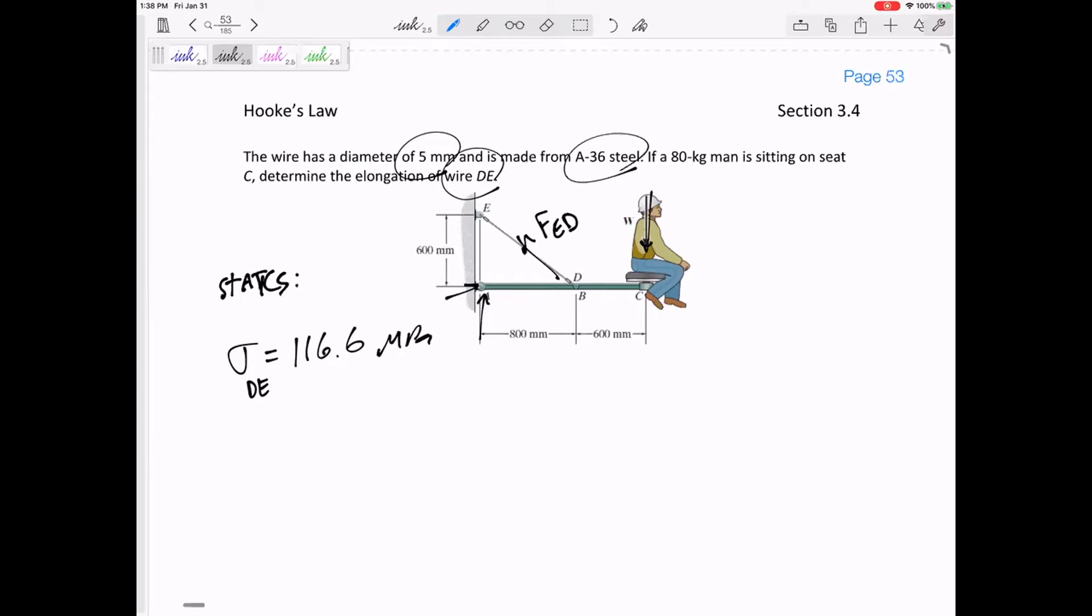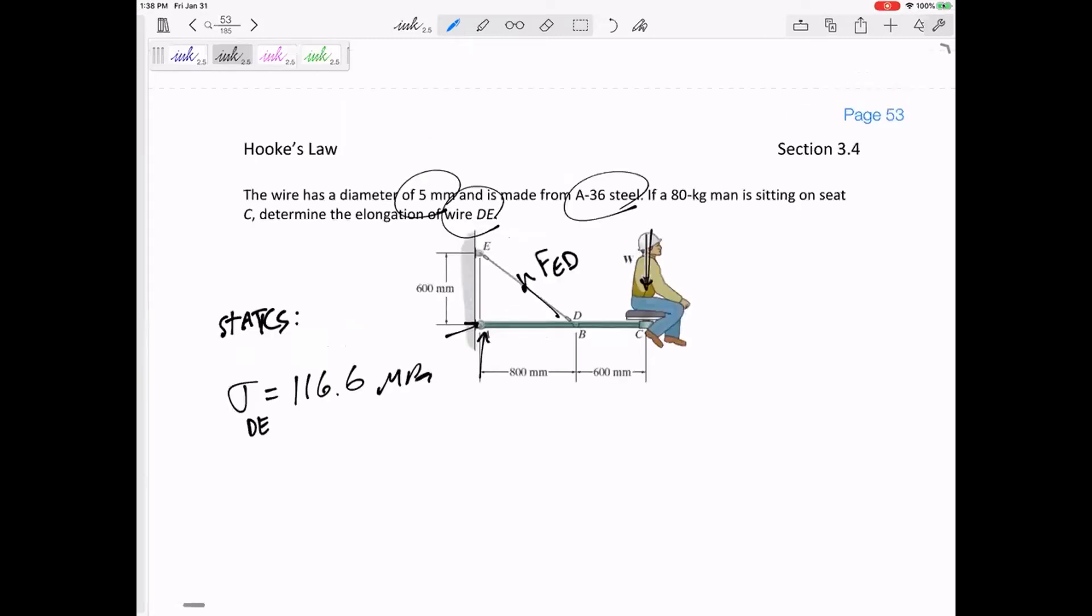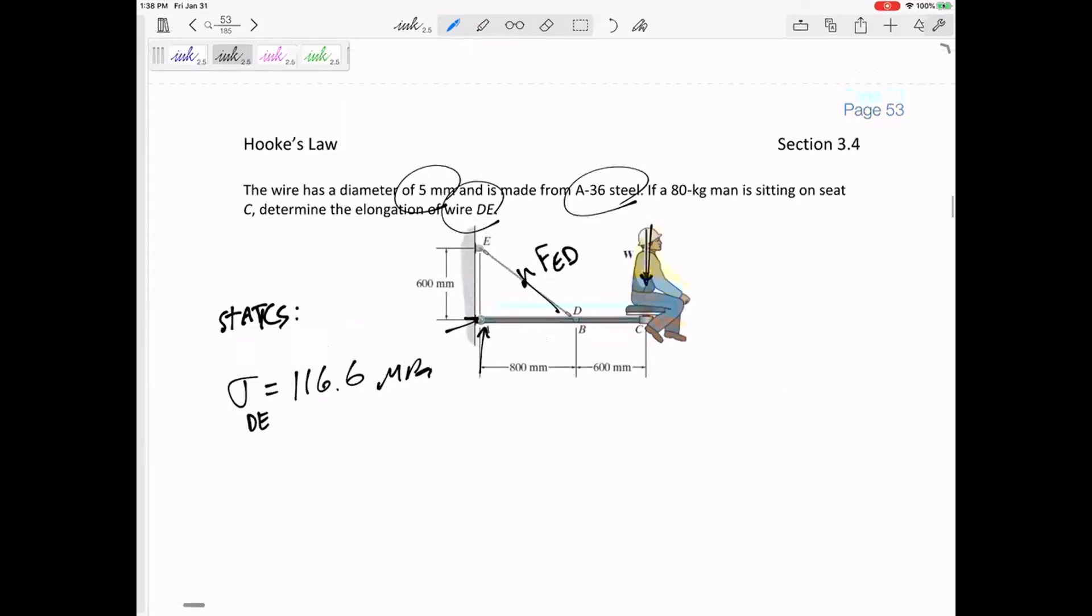In the back of the book, you could look up A36 steel to find its E, to find its yield stress, to find things like this. I think that this one is less than the yield stress. So what happens when the stress that you've got is less than the yield stress? It's in that elastic region.